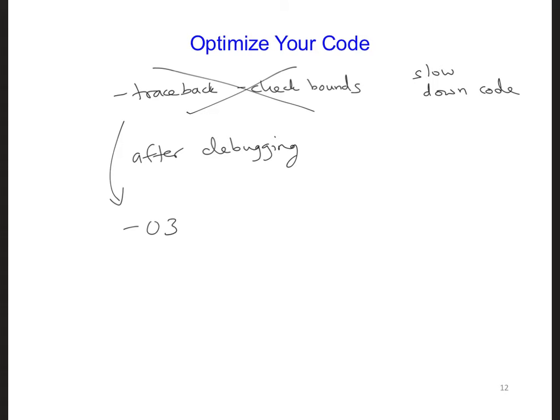In other words, for a production code that you already know works well, you can compile your code using something like ifort and then your file.f90, whatever you're calling your code, and then just have dash O3, which is an optimization flag.